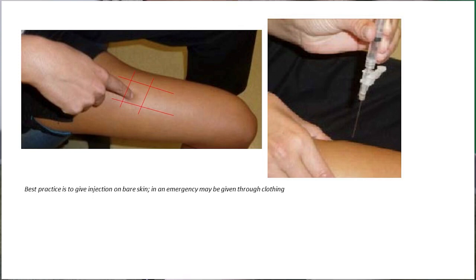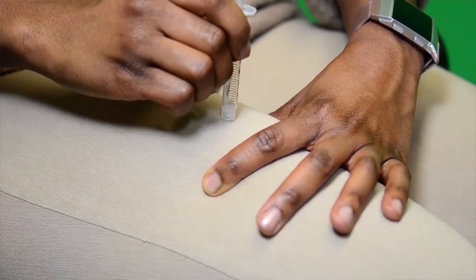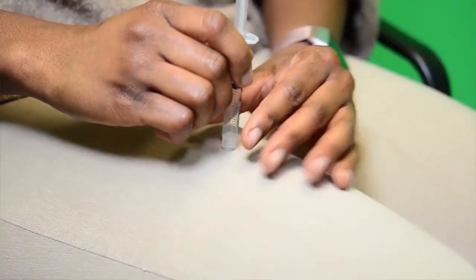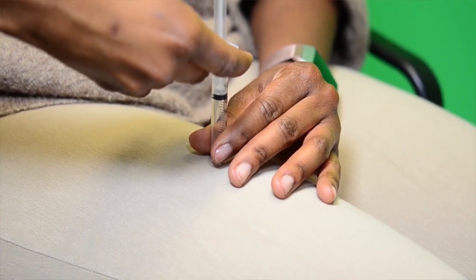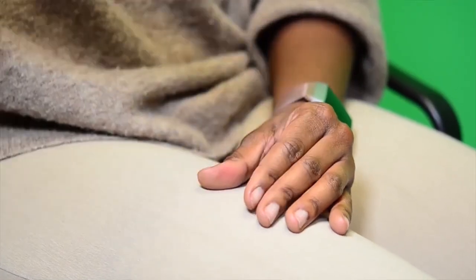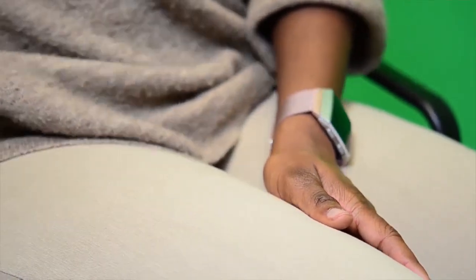Hold the syringe like a dart and use the thumb and forefinger of the other hand to hold the skin around the injection site. With a firm, smooth motion, insert the needle into the skin at a 90 degree angle. Hold the needle steady and push the plunger to inject the medicine. Quickly pull out the needle and you can gently massage the area with a tissue or cotton ball if available.